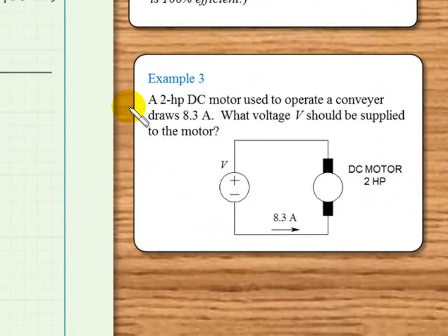Example 3. A 2 horsepower DC motor used to operate a conveyor draws 8.3 amps. What voltage V should be supplied to the motor?